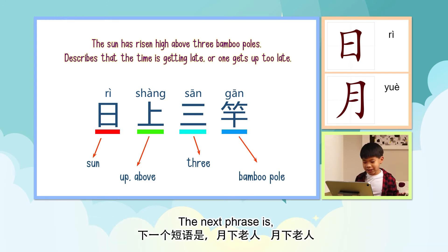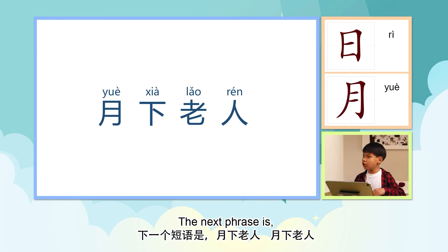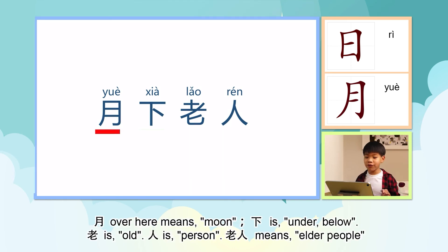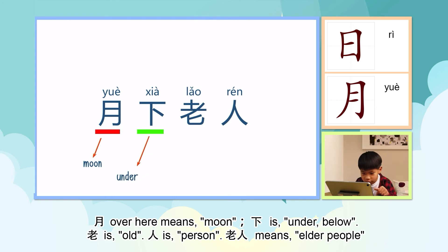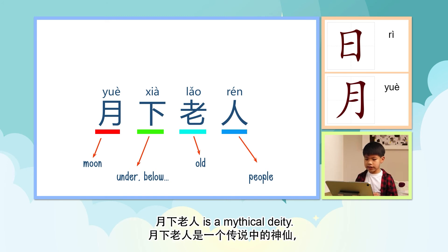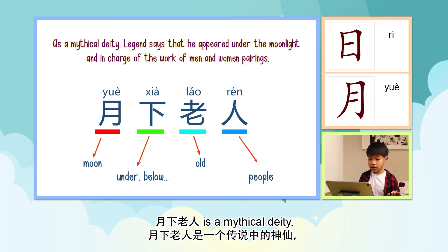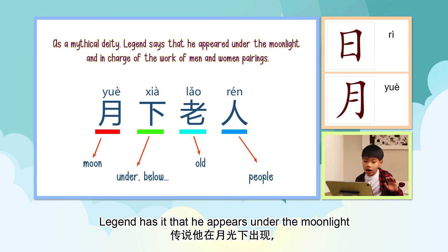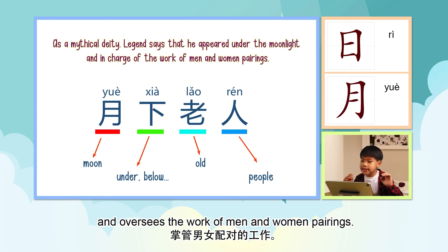The next phrase is 月下老人. 月 over here means moon. 下 is under. 老 is old. 人 means person. 老人 means elder people. 月下老人 is a mythical deity. Legend has it that he appears under the moonlight and oversees the work of matchmaking between men and women.